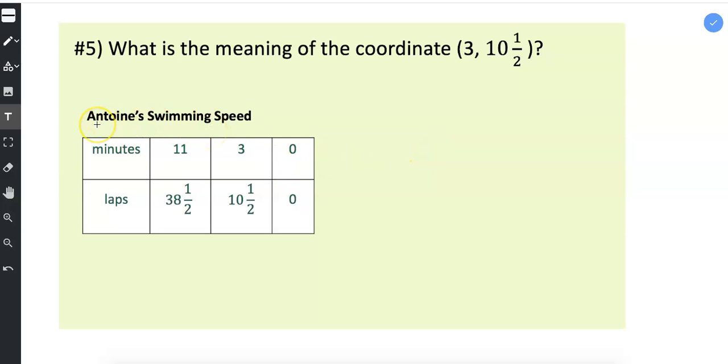We actually have a title for this example, Antoine's Swimming Speed, and then we have minutes for our x variable and laps for our y variable.